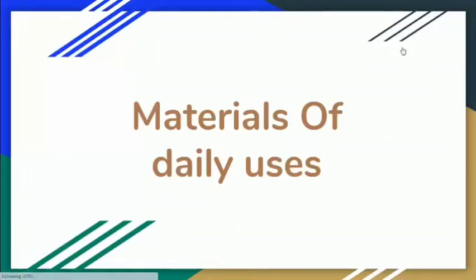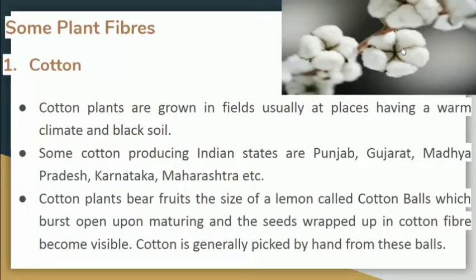This is our last topic where we are going to discuss about some plant fibers. First we are going to discuss cotton. Cotton is grown in fields usually at places having a warm climate and black soil. Black soil is mandatory for the growth of good cotton. Cotton producing Indian states are Punjab, Gujarat, Madhya Pradesh, Karnataka, Maharashtra, etc. Cotton plants bear fruit the size of a lemon called cotton bolls, which burst open upon maturing and the seeds wrapped in cotton fiber become visible.